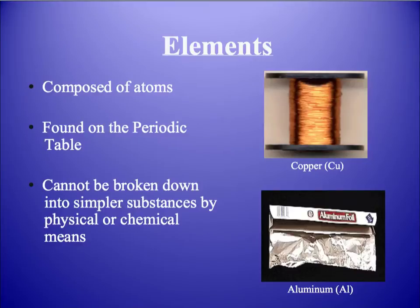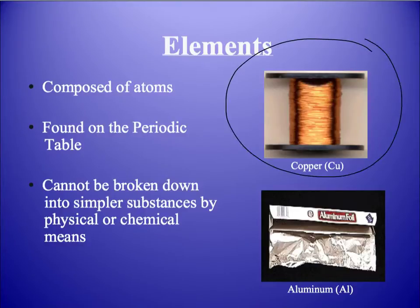The first type of pure substance is elements. Elements are composed of atoms and you can find them on the periodic table of elements. Elements cannot be broken down into simpler substances by physical or chemical means. Some examples are copper, like in copper wire, and aluminum, which is in aluminum foil.